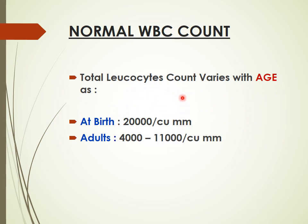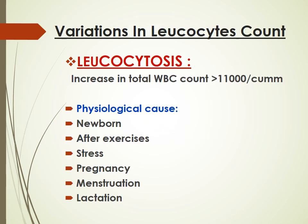The normal WBC count — total leukocyte count — varies with age. At the time of birth it is 20,000 per cubic millimeter, while in adults the normal WBC count is between 4,000 to 11,000 per cubic millimeter of blood.